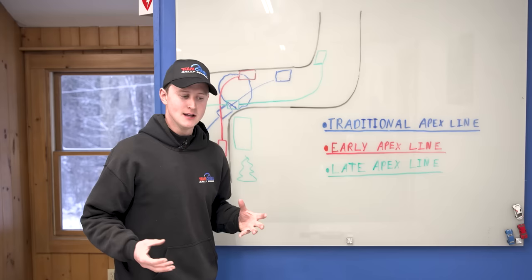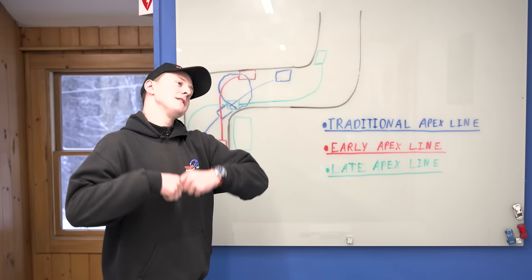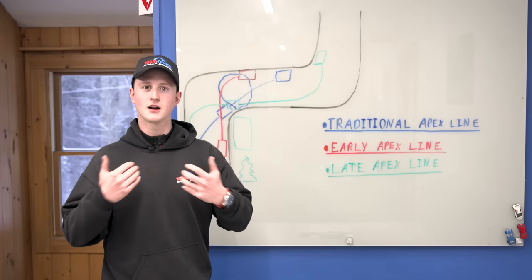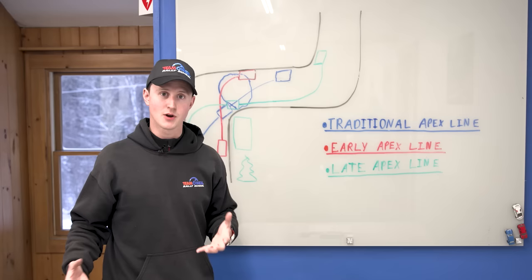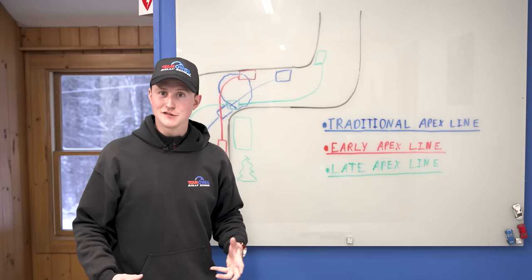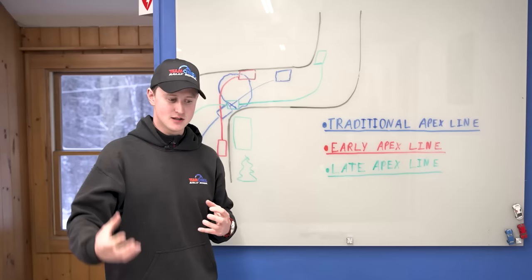That's a once-over of how we approach lines, apexes, and car placement here at Team O'Neill. This is really quite a rabbit hole — we could make a whole video series on it once we start talking about decreasing radius, crests, and all sorts of other factors. If you'd like to learn more, come to the rally school where you'll encounter all kinds of different terrains, corners, and vehicle types. If you can't make it out, subscribe to the YouTube channel — we'll be putting out all kinds of content on rally driving and car control. Thanks for watching, I've been Drew, and we'll see you next time.